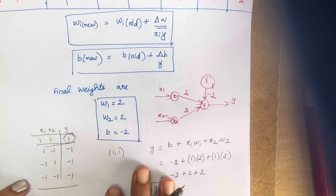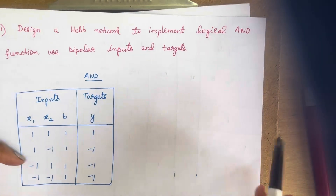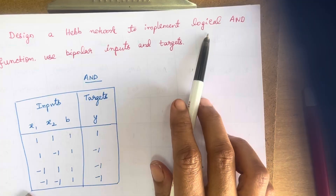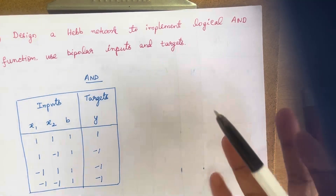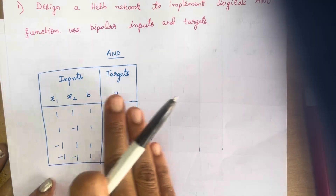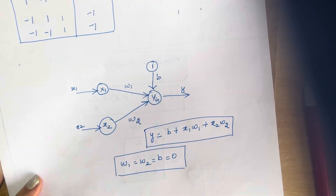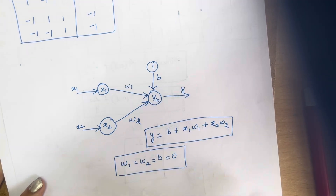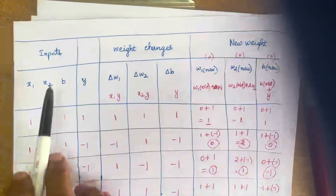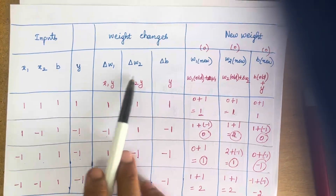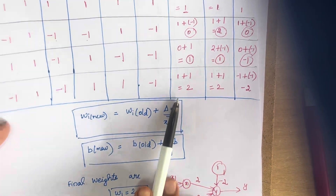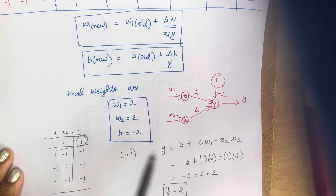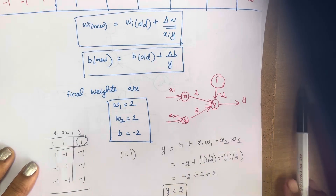This is how you solve any HEP network problem. Here we used a HEP network with logical AND, but they can give you any other function such as logical OR or NOT AND. You must draw the truth table first, then draw the network, write the equation, and create the tabular column with inputs, weight changes, and new weights. Initialize all weights and bias to 0, apply the formula to find the final weights, and then verify by substituting the inputs. Thank you for watching.